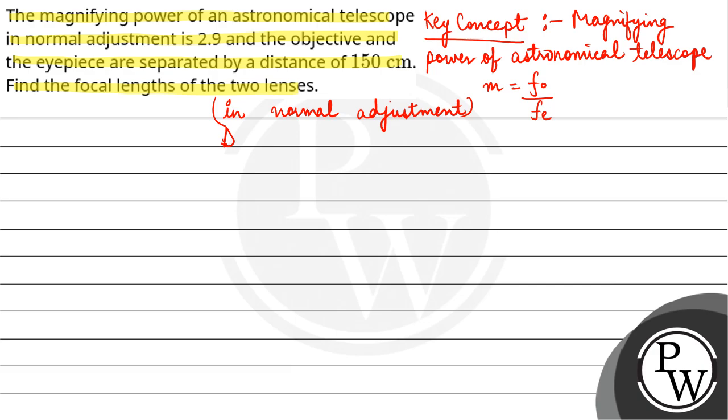We can take L, the distance between objective and eyepiece, as equal to F_o plus F_e.